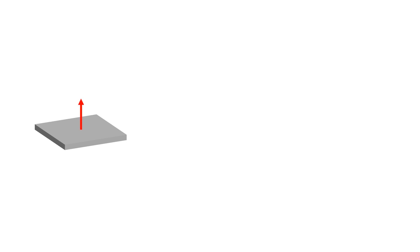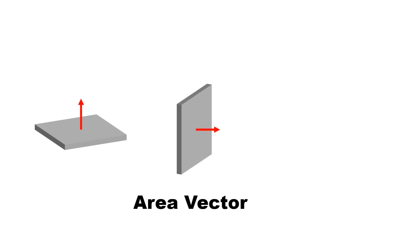One more thing: a vector not only represents length but also defines area. This is called an area vector, whose direction is perpendicular to the surface and whose length is proportional to the area. Now, to understand tensors, let's take three different examples: temperature, displacement, and stress.